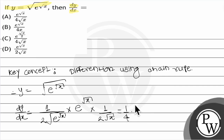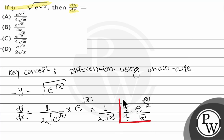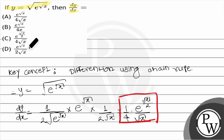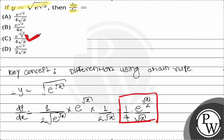So the numerator becomes e to the power root x into one by two, meaning root x, divided by two e to the power root x divided by two, whole divided by root x. Your final answer will be one by four into e to the power root x by two upon root x. Checking the options, option number C — e to the power root x by two upon four root x — is the correct option. I hope everybody understood, thank you so much.